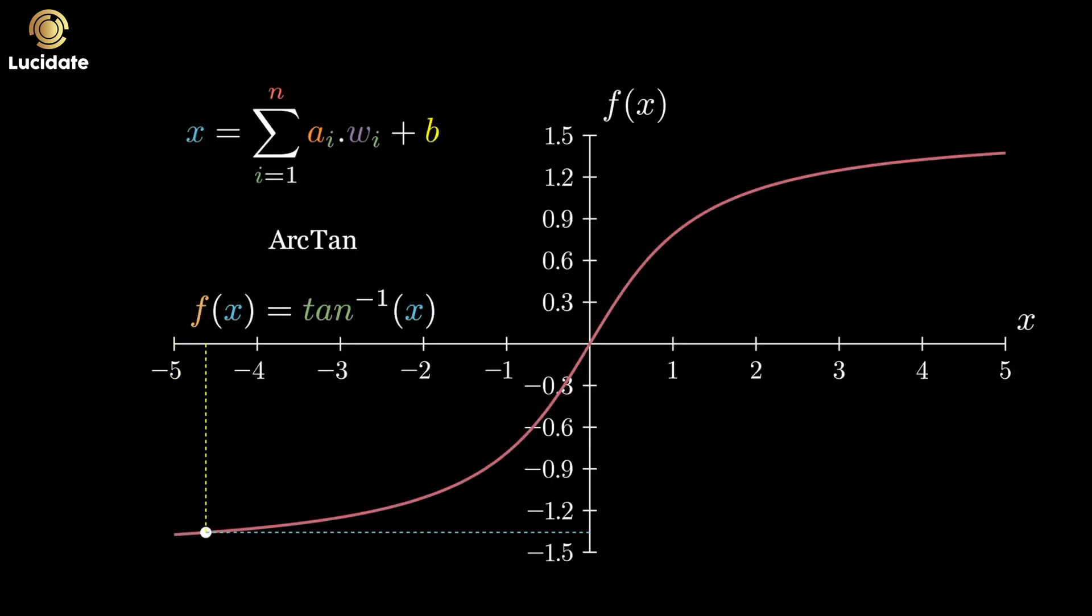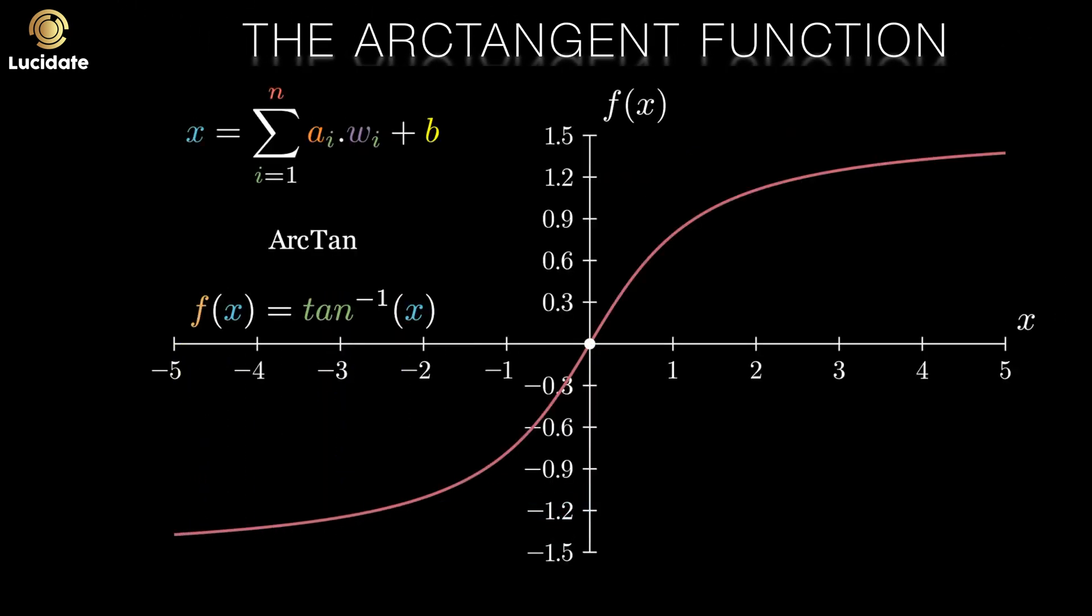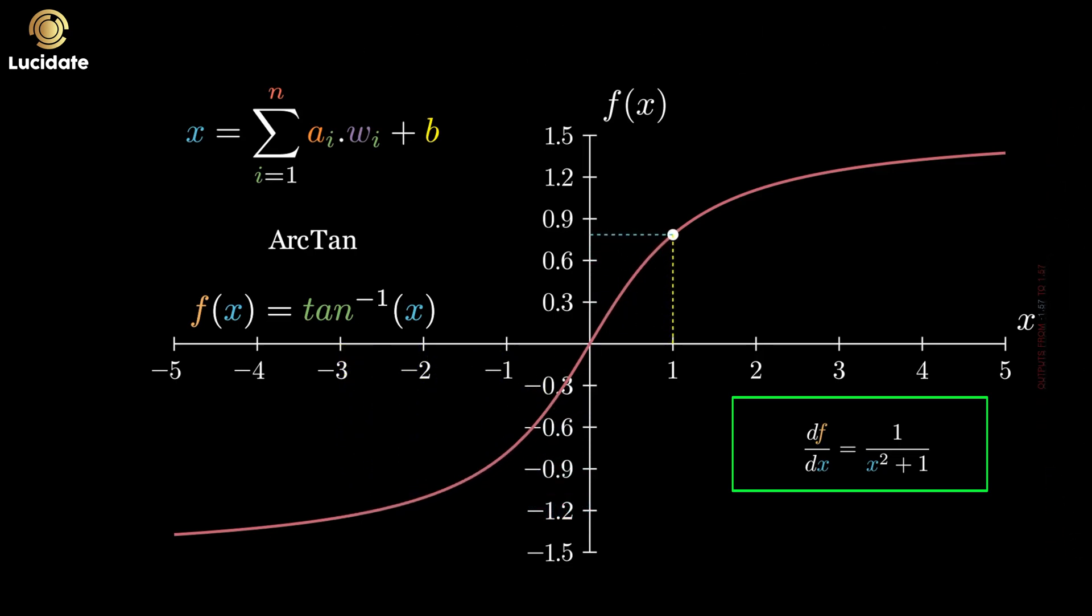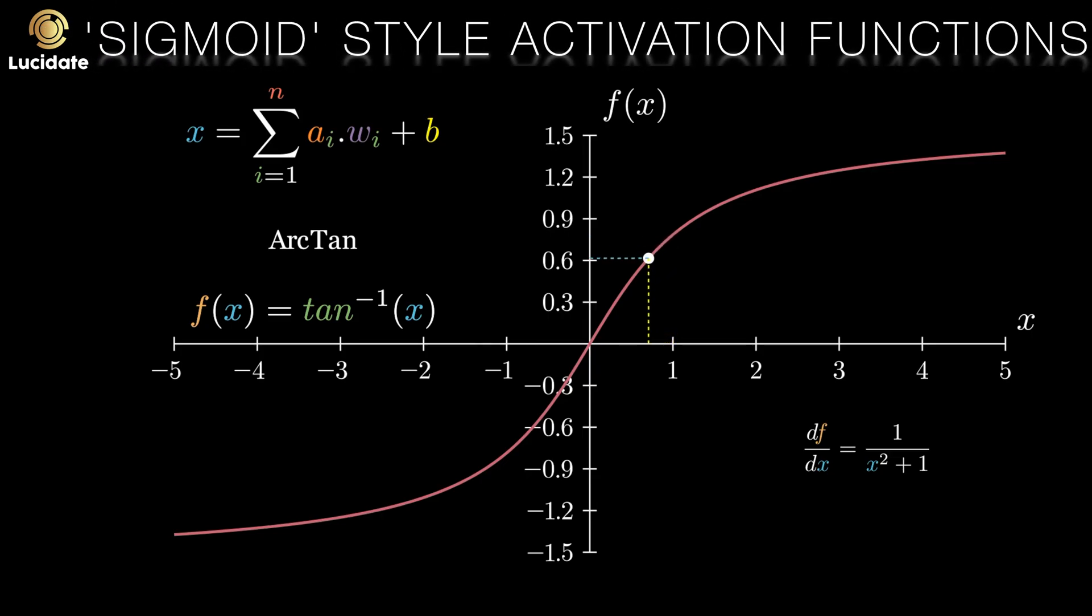We can extend this a little further with Arctan. This ticks a lot of the boxes. It's a non-linear function. It provides both positive and negative outputs and compresses its outputs into a range between minus 1.57 and plus 1.57. Frankly, it's not used that much. We're chasing down a vanishing gradients black hole here.